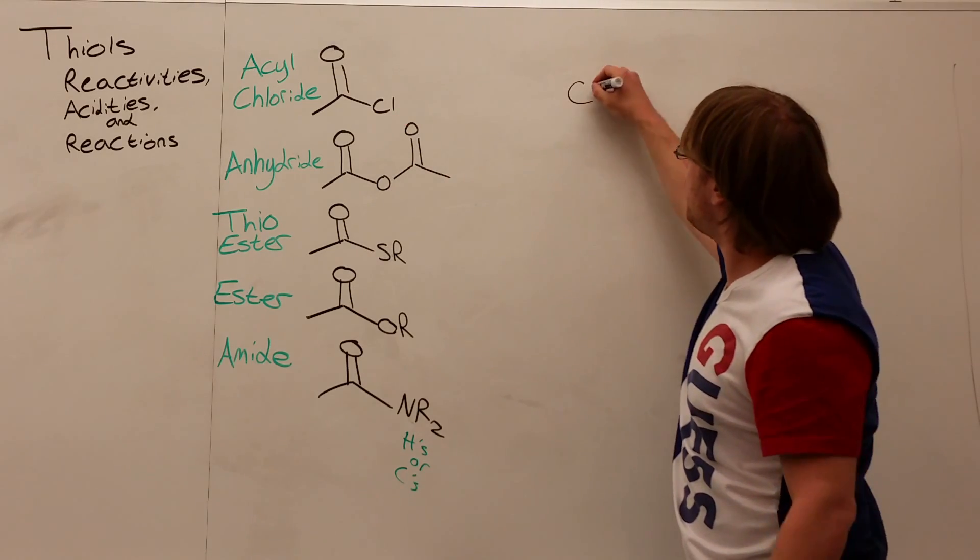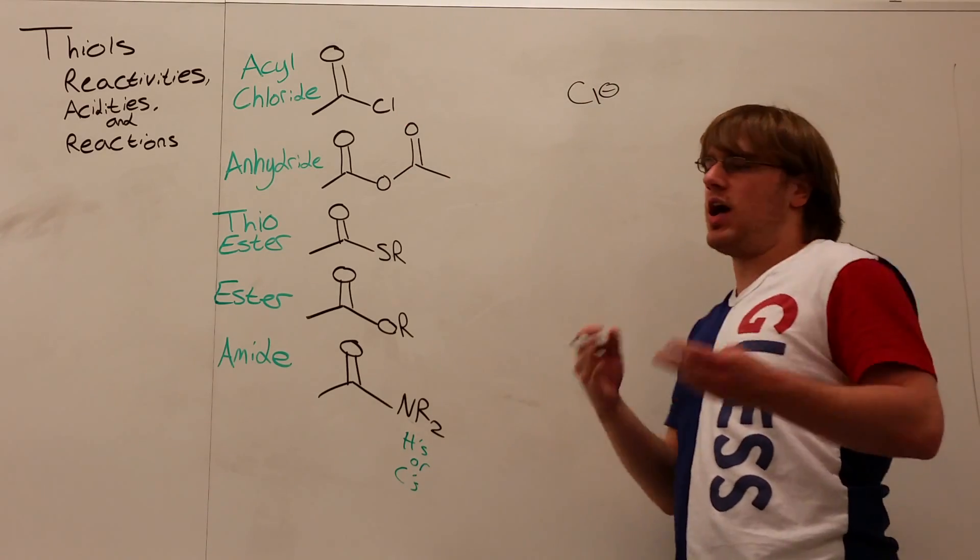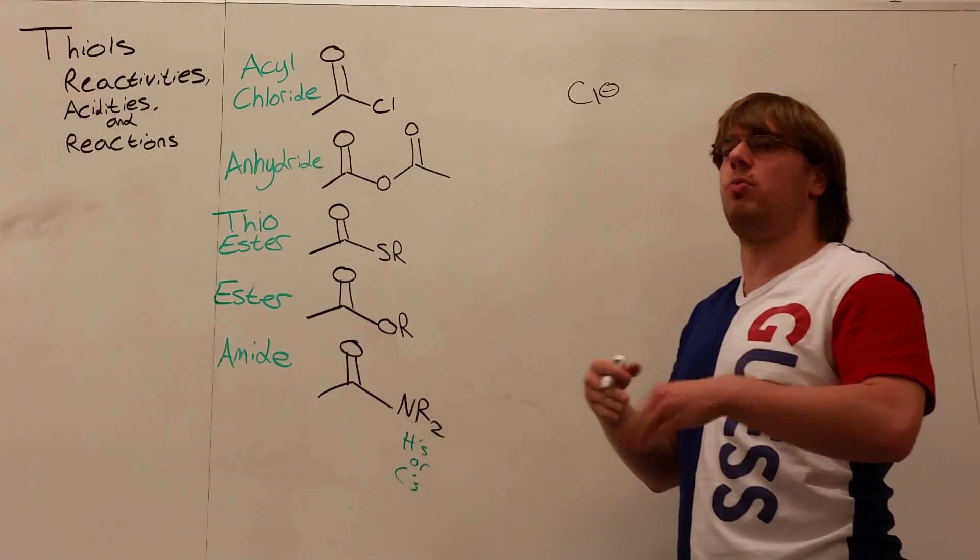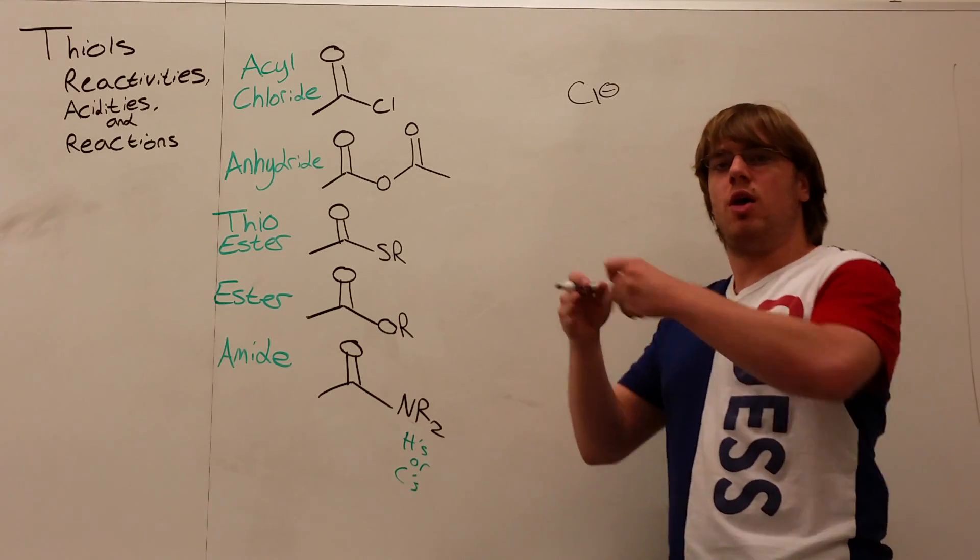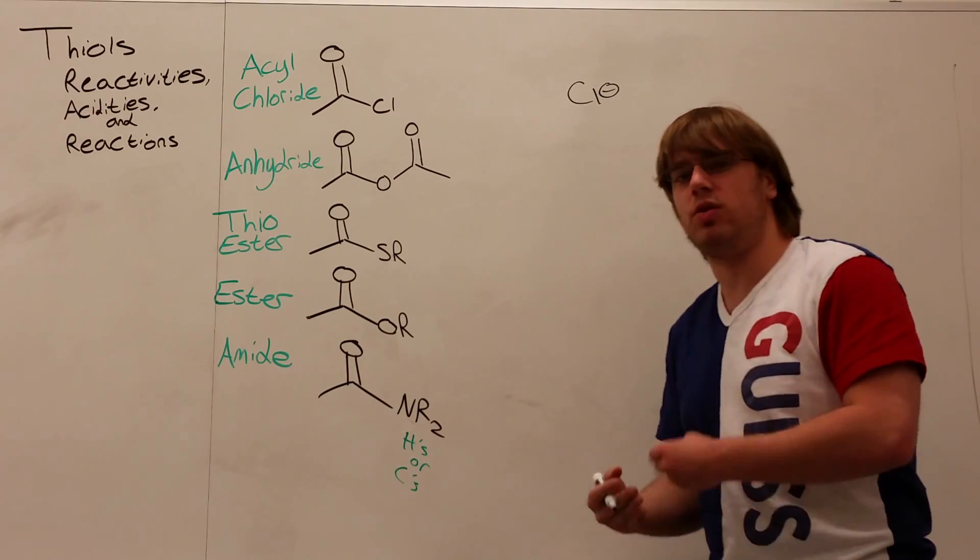So, let's look at the individual leaving groups first. Acyl chloride would pop off a Cl minus. Now, we've learned that halogens are super electronegative, and to have that negative charge, it's pretty stable, just alone, because of electronegativities, but also because when it's negative, it has a full octet, we have a very, very stable leaving group.